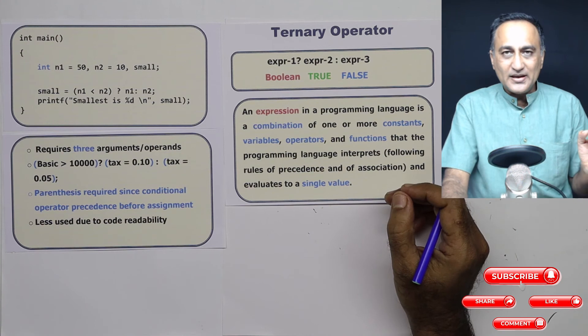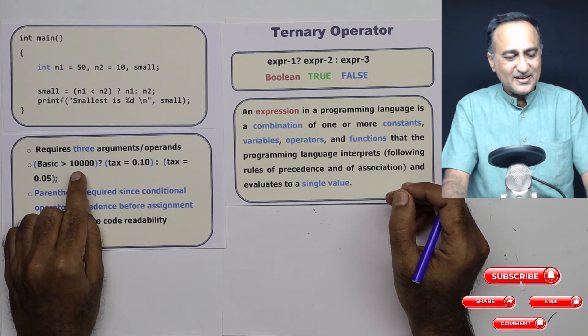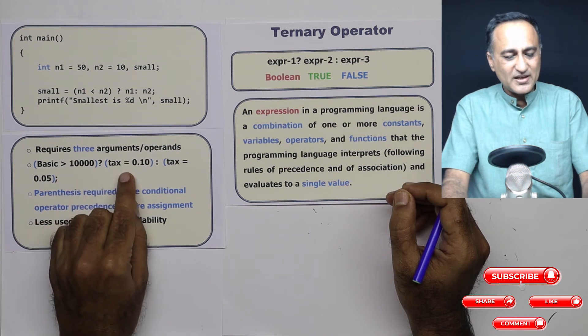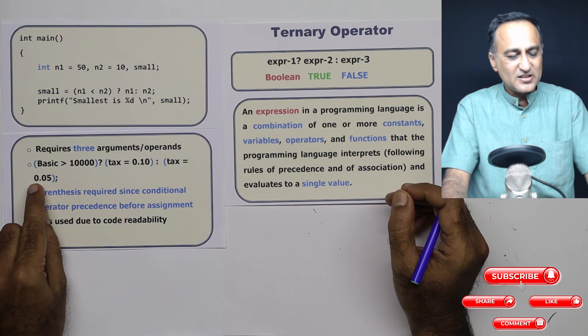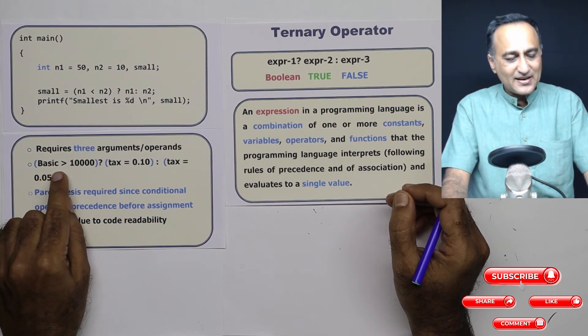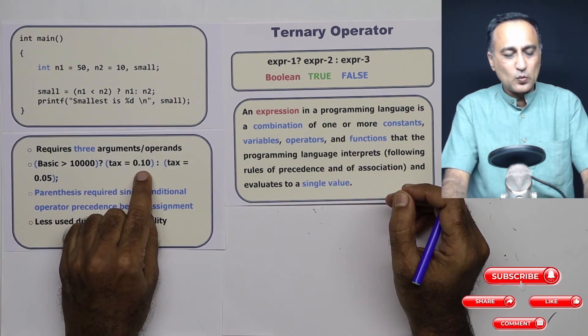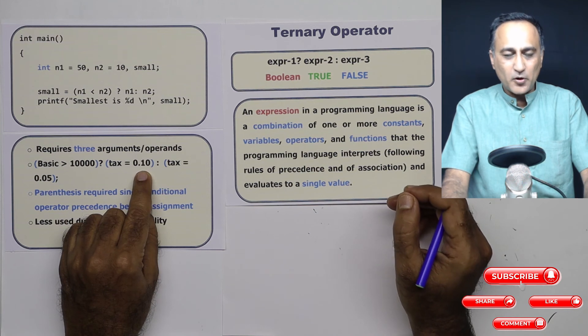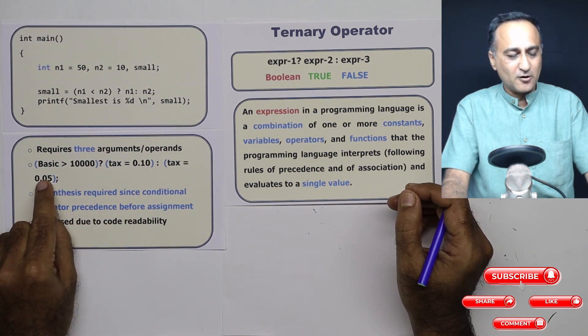Now suppose I want to check using a ternary operator that if the basic is greater than 10,000, then I want to say the tax is 0.10 or the tax of other cases 0.05. So here what I'm trying to say is, if the basic salary is greater than 10,000, then the tax is 10%. Otherwise, the tax is 5% of the basic.